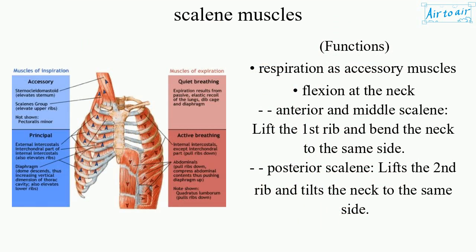Functions: respiration as accessory muscles, flexion at the neck — anterior and middle scalene lift the first rib and bend the neck to the same side. Posterior scalene lifts the second rib and tilts the neck to the same side.